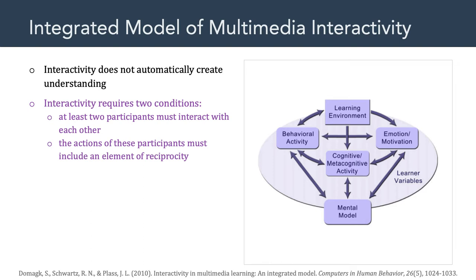Another important requirement of interactivity is that the actions of these participants must include an element of reciprocity. Reciprocity means that change occurs on both sides — the actions of one party trigger responses from the other, which lead in turn to changes in the first. Some authors have pointed out that reciprocity — action followed by a reaction — is not enough. You also have to have responsiveness. Responsiveness is the degree to which the reactions on both sides are related, relevant, and sustain the continuity of the interaction. The reciprocity can't be random; it has to be relevant and meaningful to one of the two parties that are interacting.